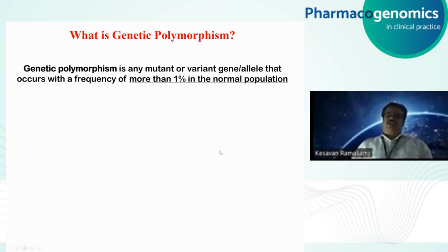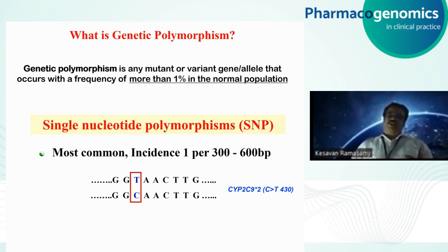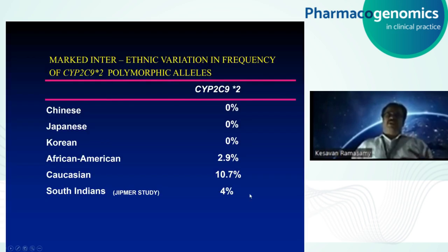Genetic polymorphism is defined as when the prevalence of a particular allele in the population is more than 1%. The most common type is single nucleotide polymorphism, which we already discussed. Before performing any pharmacogenomic study, the basic step is to see the prevalence of that variant in the population. Looking at different populations for star 2 and star 3, more than 50 variants have been reported. The reason star 2 and star 3 are important is because of the marked inter-ethnic variation in their frequency.